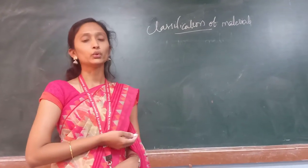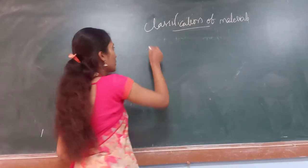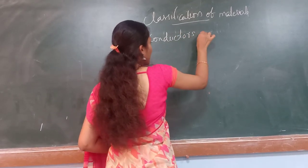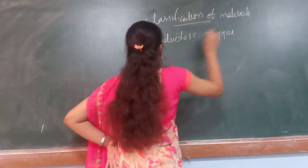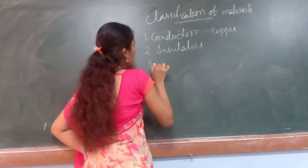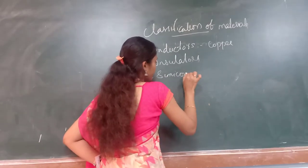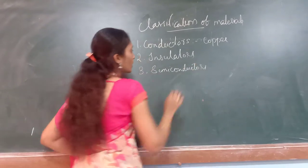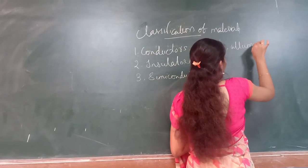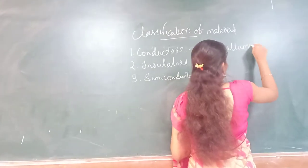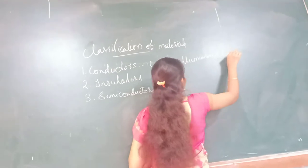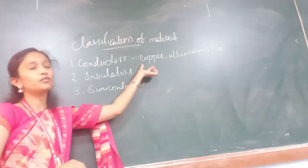Materials are classified into three types: conductors, insulators, and semiconductors. For conductors, examples are copper, aluminum, and zinc. Copper is the best example for conductivity.